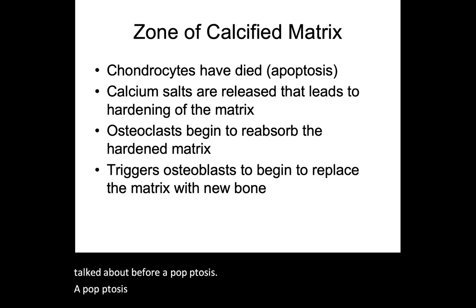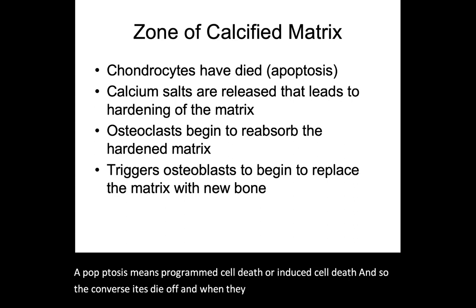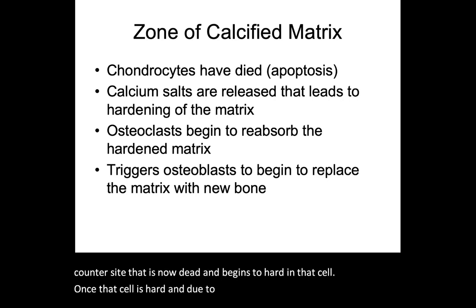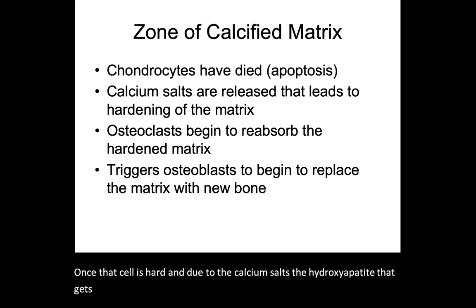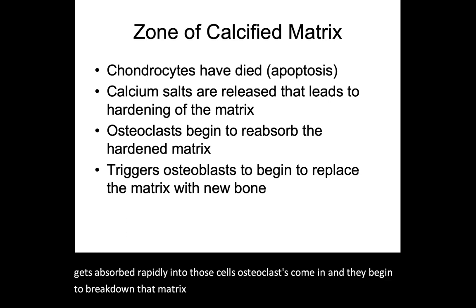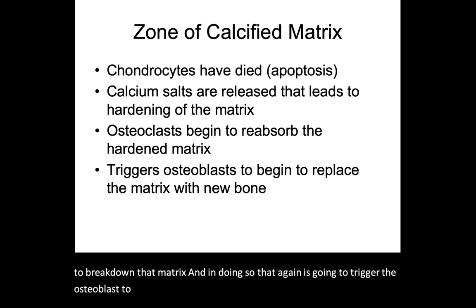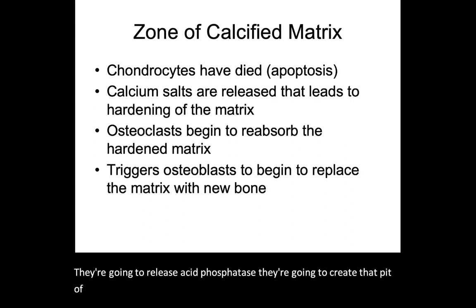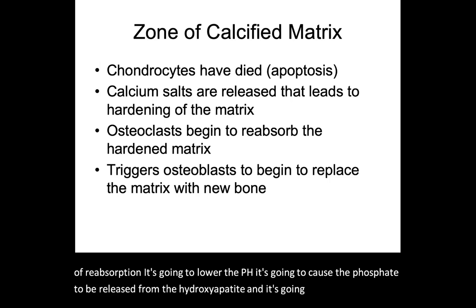When the chondrocytes die, calcium salts rush into the now-dead chondrocyte and begin to harden that cell. Once that cell is hardened due to calcium salts and the hydroxyapatite that gets absorbed rapidly into those cells, osteoclasts come in and begin to break down that matrix. In doing so, that triggers osteoblasts to come in and actually lay down new bone. Those osteoclasts release acid phosphatase, create a pit of reabsorption, lower the pH, and cause the phosphate to be released from the hydroxyapatite, which stimulates the osteoblasts.